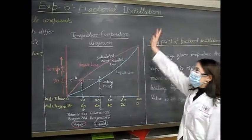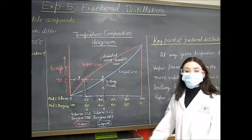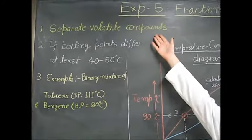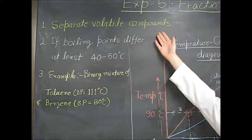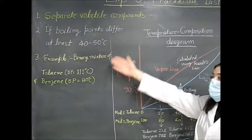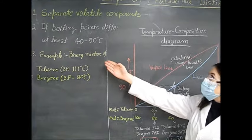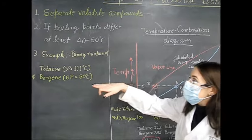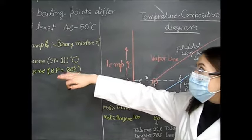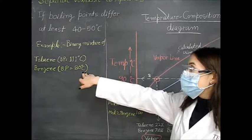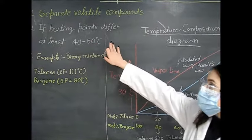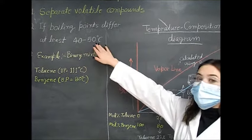Experiment 5: fractional distillation. Fractional distillation is a technique used to separate volatile compounds. We are able to separate these compounds if their boiling points differ by at least 40 to 50 degrees Celsius. One example is toluene and benzene, which have boiling points of 111 degrees Celsius and 80 degrees Celsius — qualifying under that requirement.